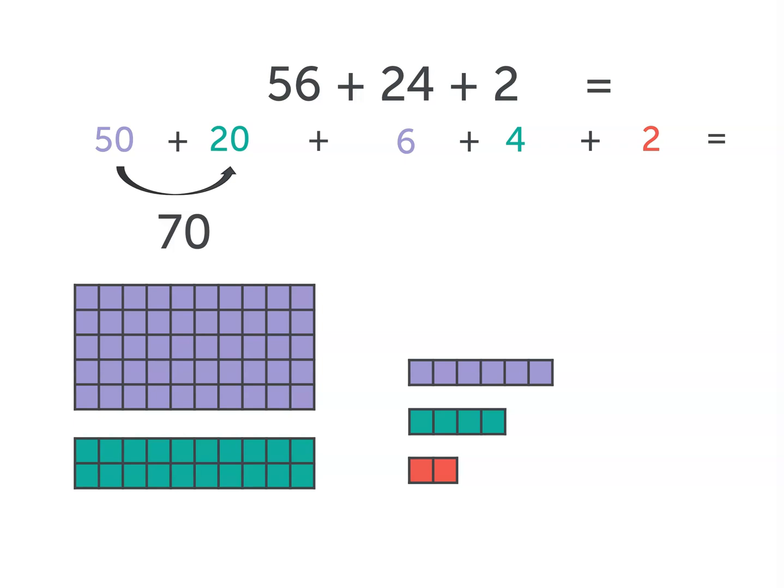50 plus 20 gave us 70, 6 plus 4 gave us 10, and then another 2 more.